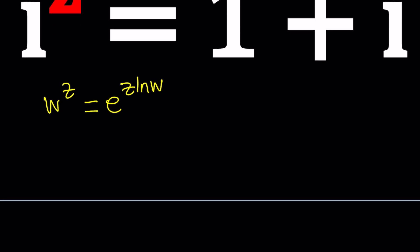So suppose W and Z are complex numbers. W to the power Z is defined as e to the power Z ln W. And we'll talk about the ln of the complex number too. But this is how we can define it with the exponential.